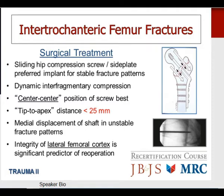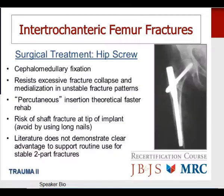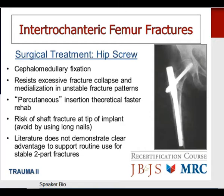Cephalomedullary fixation — a hip screw — has the advantage for unstable fracture patterns in resisting excessive fracture collapse and medialization of the shaft. It can be inserted through a smaller percutaneous incision for faster rehabilitation. There is a risk of femoral shaft fracture at the nail tip; using long nails can avoid this, though long nails risk anterior cortical penetration due to mismatch between the nail bow and femoral bow. The literature does not support the routine use of cephalomedullary implants for stable two-part fractures — for those, the sliding hip compression screw and side plate remains preferred.